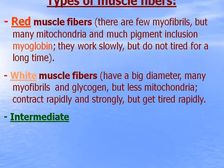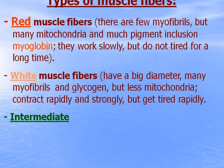There are two types of muscle fibers: red, white, and also there is an intermediate type. Red muscle fibers are red because they contain much pigment — myoglobin — which is dark red in color, like hemoglobin in erythrocytes, and can also accumulate oxygen. There are few myofibrils but many mitochondria in red muscle fibers. They work slowly but do not tire for a long time.